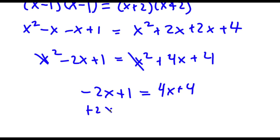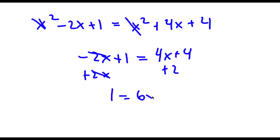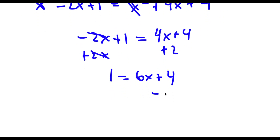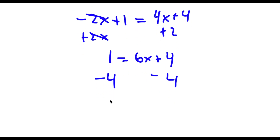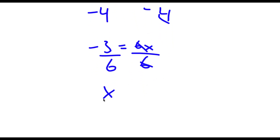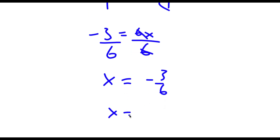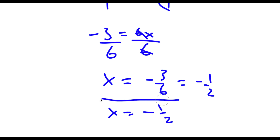Adding 2x to both sides gives 1 equals 6x plus 4. Subtracting 4 from both sides gives negative 3 equals 6x. Dividing both sides by 6, I'm left with x equals negative 3 over 6, which equals negative one half. So x equals negative one half — this is our answer.